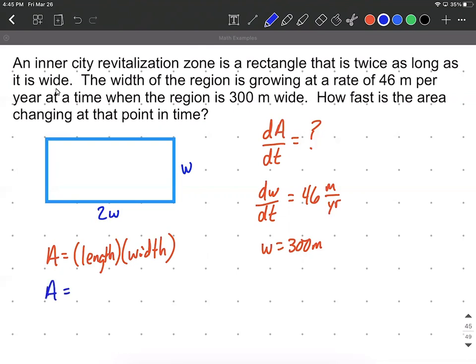So our area can be represented by the length, which would be 2W, multiplied by the width, which is going to be W, or that's going to be the same thing as 2W squared.